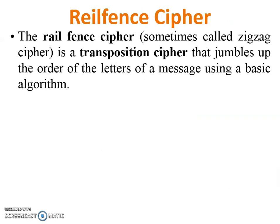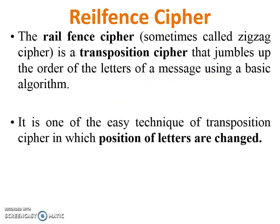In detail, the Rail Fence Cipher — sometimes called zigzag cipher — is one where the plain text is written in zigzag order. It is a transposition cipher that jumbles up the order of the letters of a message using a basic algorithm. It is one of the easy techniques of Transposition Cipher in which the position of letters are changed.